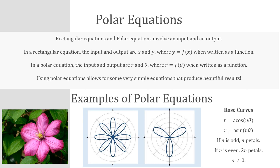If the n value is odd, then there are n petals. If the n value is even, then there are two n petals. And, of course, a cannot equal zero. We'll look at some examples of this in a minute.